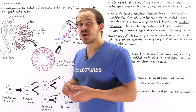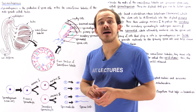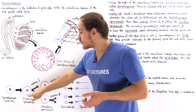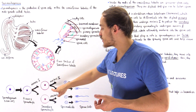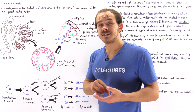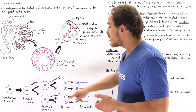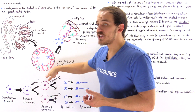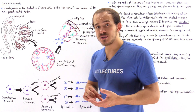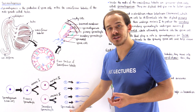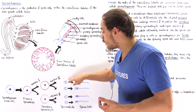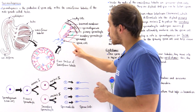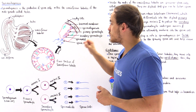The primary spermatocyte undergoes meiosis 1, producing two haploid cells with 23 chromosomes — half the chromosome number of the primary spermatocyte. These two cells are known as secondary spermatocytes. Each secondary spermatocyte can then undergo meiosis 2, producing haploid cells known as spermatids. Overall, four spermatids are produced from one primary spermatocyte.